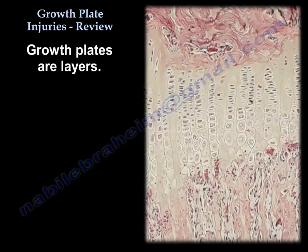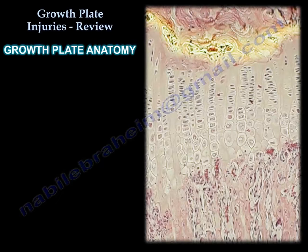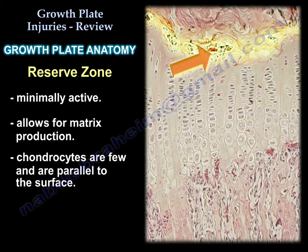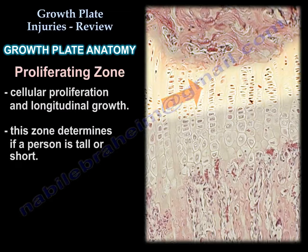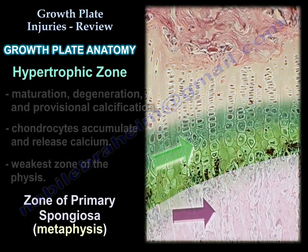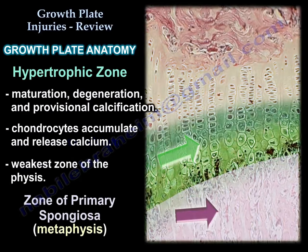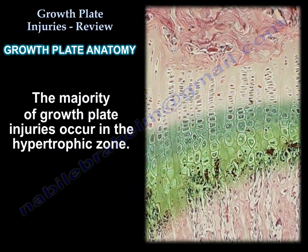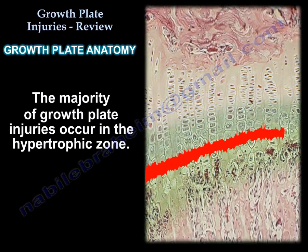Growth plates are layers. The reserve zone is minimally active and allows for matrix production; the chondrocytes are few and lie parallel to the surface. The proliferative zone is where cellular proliferation and longitudinal growth occurs, and it determines if the person will be tall or short. In the hypertrophic zone, maturation, degeneration, and provisional calcification occur — the chondrocytes accumulate and release calcium. This is the weakest zone, and the majority of growth plate injuries occur here.